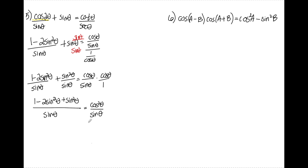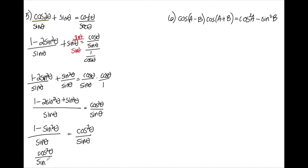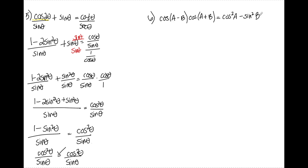Simplifying the left numerator: negative 2 sine squared plus sine squared is negative 1 sine squared, so I have 1 minus sine squared over sine theta. Using the Pythagorean identity, 1 minus sine squared equals cosine squared, giving cosine squared theta over sine theta equals cosine squared over sine theta. Number six: cosine of A minus B times cosine of A plus B equals cosine squared A minus sine squared B. This one's a little tricky, and I'll leave it for you to figure out. Feel free to leave questions in the comments below. Good luck, have a great day!